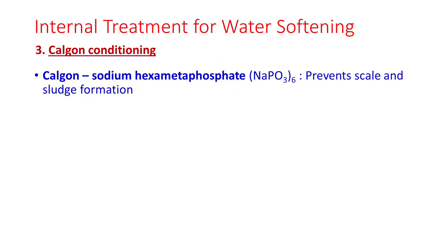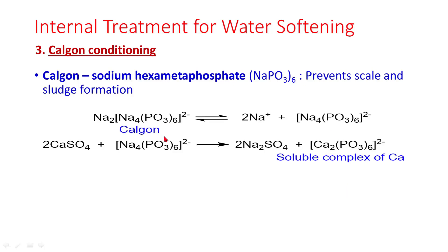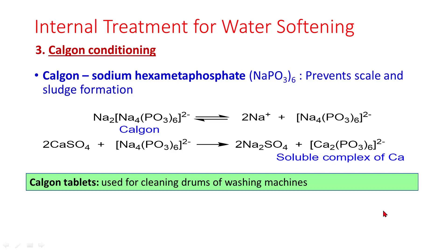Chalgone conditioning: Chalgone is sodium hexametaphosphate, Na(PO₃)₆. It prevents scale and sludge formation. Chalgone dissociates to give Na₄(PO₃)₆²⁻, which is a complex ion. It reacts with permanent hardness to give rise to a soluble complex of calcium. Chalgone tablets are also used for cleaning drums of washing machines.